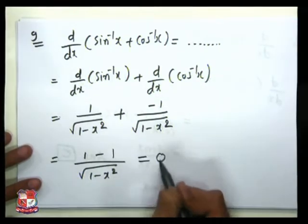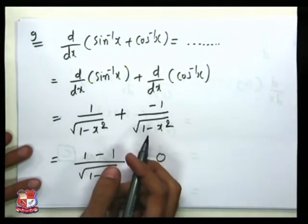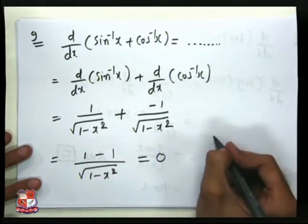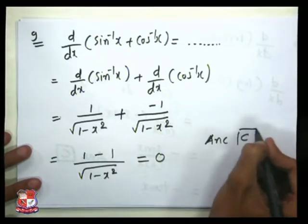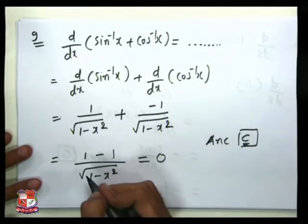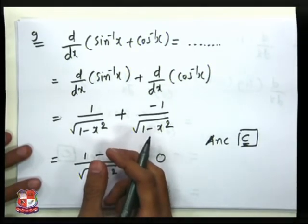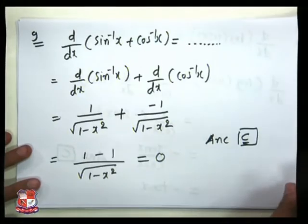Minus x squared, that is equal to 0. 1 minus 1 is equal to 0, and the answer is given in option C. C is 0, so our answer is C. This is the solution of the ninth question, which is from the differentiation side — the third question from differentiation.